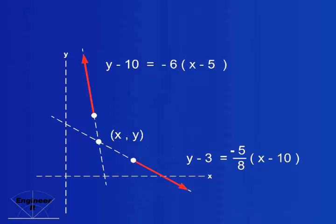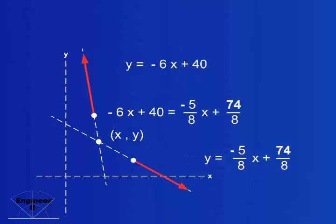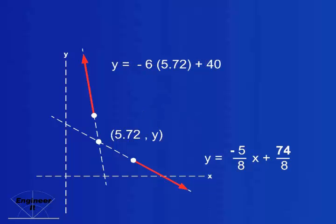The intersection point of these two lines is whatever point satisfies both equations. Here, we have solved each equation for y, then set them equal to one another. You can then solve the resulting equation for x and plug this x back into either original equation to find the corresponding y.